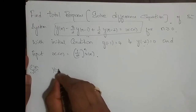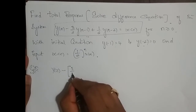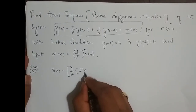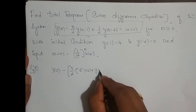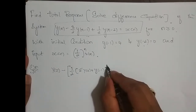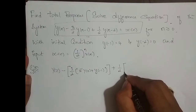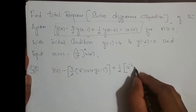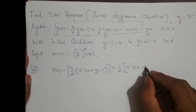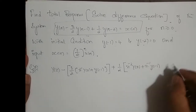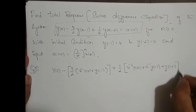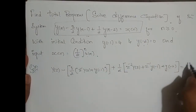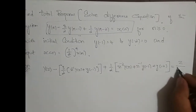The Z-transform of y(n) is Y(z), minus 3/2 times the unilateral Z-transform of y(n-1), which is z⁻¹·Y(z) plus y(-1). Plus 1/2 times the unilateral Z-transform of y(n-2), which is z⁻²·Y(z) plus z⁻¹·y(-1) plus y(-2), equals the Z-transform of x(n). The input x(n) is (1/2)ⁿ·u(n), and its Z-transform is z/(z - 1/2).